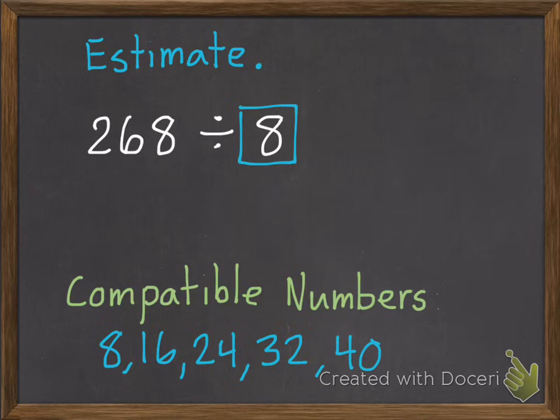So we're going to look at the first two digits, our hundreds and our tens of 268. We want to find which of those compatible numbers is closest to 26. So 26 is between 24 and 32. It's two numbers away from 24, and six numbers away from 32. So we're going to make that 26 a 24.